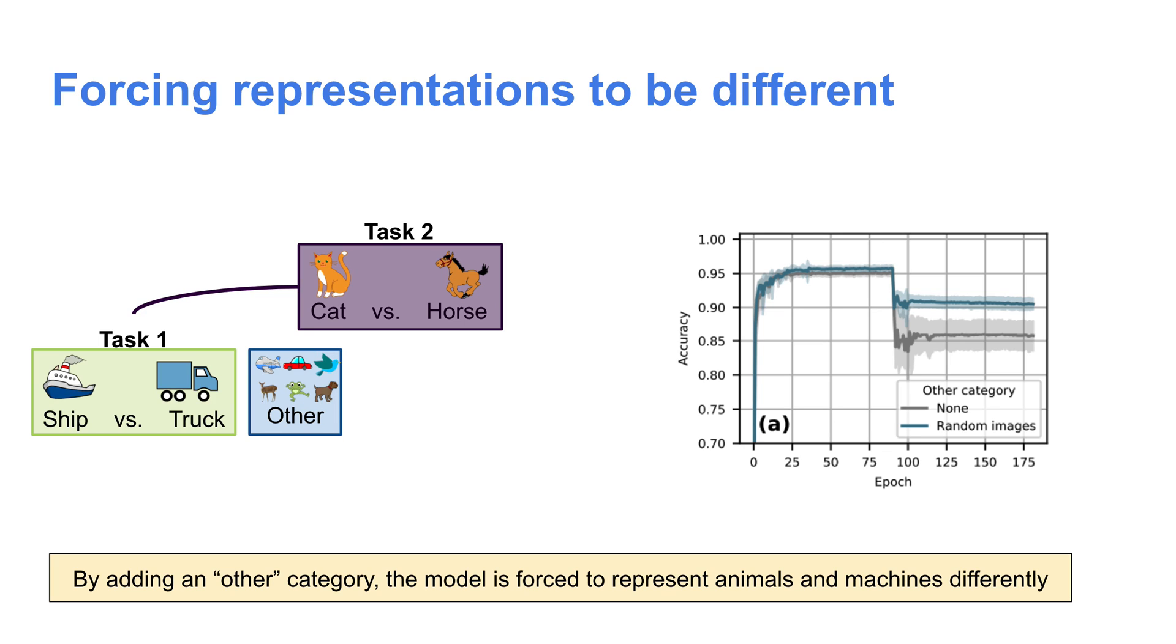Meaning that we can see, and in fact do see, significant forgetting when we train on the animals task. Now to show that this is actually the problem, we can instead add a third category to the initial task, which we call the other category, which consists of all of the rest of the CIFAR-10 categories. The idea is that this other category forces the model to represent vehicles differently than other objects. In theory, this should cause the model to forget less when trained on animals.